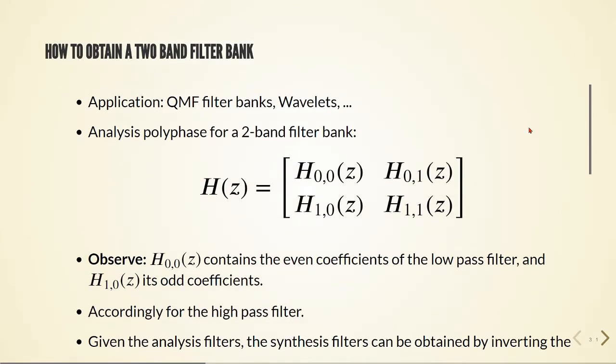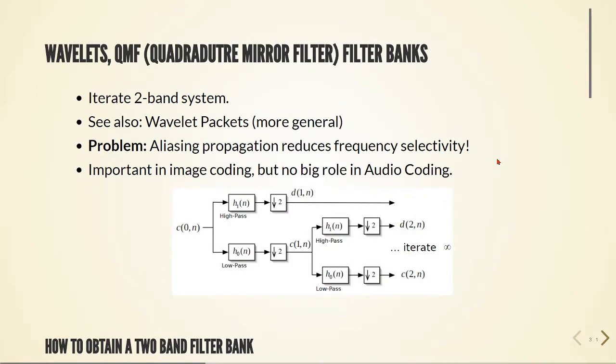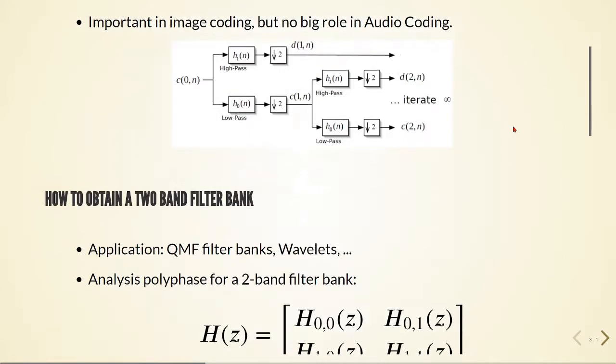So how do we obtain a two-band filter bank to produce these quadrature mirror filter banks or wavelets also? You can also refer to wavelet packets for a more general theory about this.